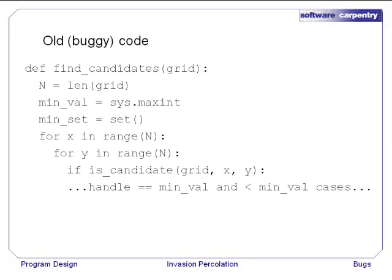This is the code that caused the problems. In FindCandidates we say, for x in range n, for y in range n, if the cell at x,y is a candidate, then go off and handle the cases where its value is equal to minval or less than minval.